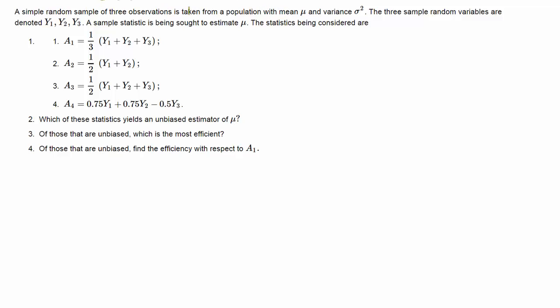In this question we are dealing with a random sample of three observations which are taken from a random variable with unknown mean and variance. The mean is called mu and what we are after now is a sample estimate for mu which is the expected value of y.